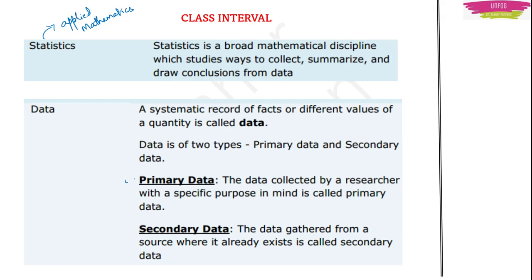One is primary data and the second one is secondary data. Primary data means it is that data which you collect with something in your mind — you want to do something using that data. That whoever wants to do something using this data is known as a researcher. So data collected by a researcher with some specific purpose in mind is called primary data. Secondary data means it is gathered from an already present source — means this data is already there, we are gathering it, not creating it. That type of data is known as secondary data.